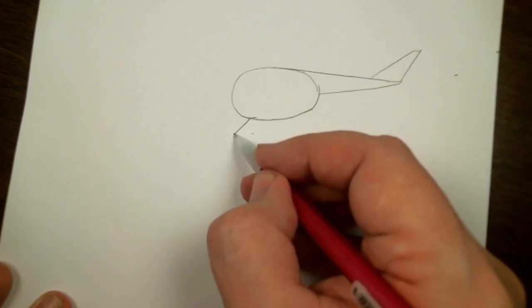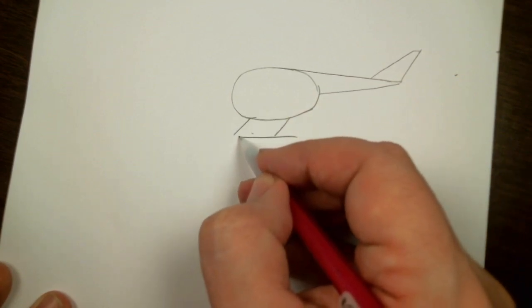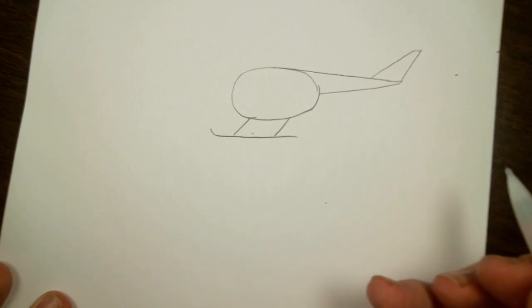Then we're going to draw two lines here and a straight line and a little curved line. It starts looking like a helicopter already.